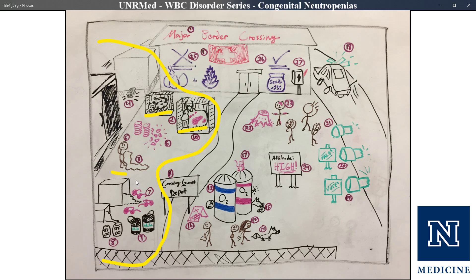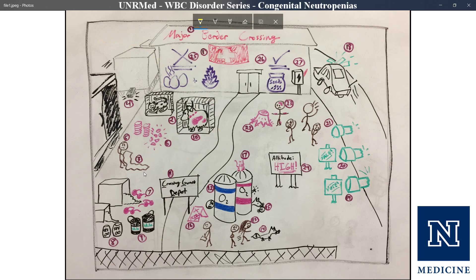One of our neutrophil workers at the border crossing is going over the manifest of this train and scratching his head. Chediak-Higashi syndrome is an autosomal recessive mutation in the CHS gene, which is responsible for encoding the lysosomal trafficking regulator, or LYST. His job is to regulate the traffic going into Switzerland by looking at this list.